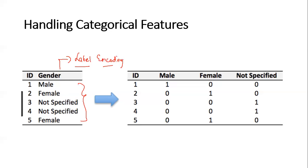Label encoding is a simple concept wherein the number of features present in a particular feature column - suppose there is a record where this feature has a value called male. This male gets converted to a new label or gets assigned a label like 0. Then female will get assigned to another label like 1. Not specified will get assigned to a new label called 2. These labels will then repeat - not specified will have value 2, female will have value 1.